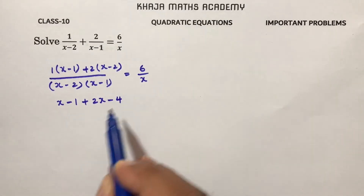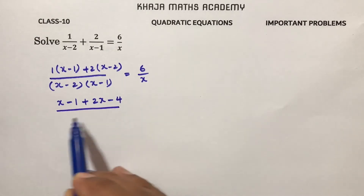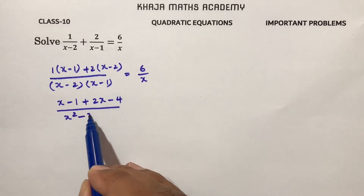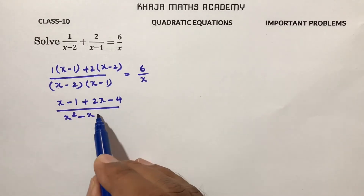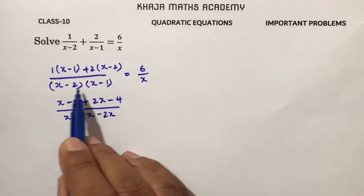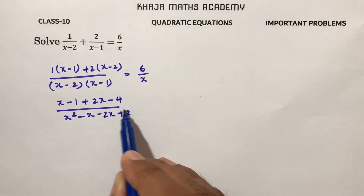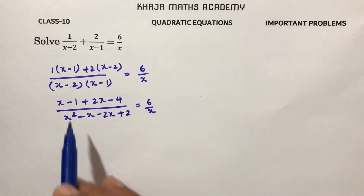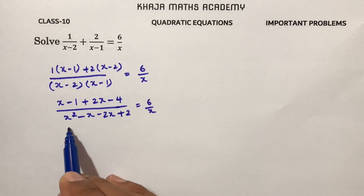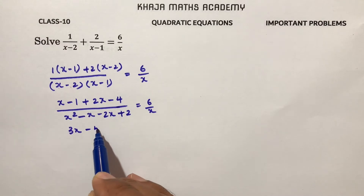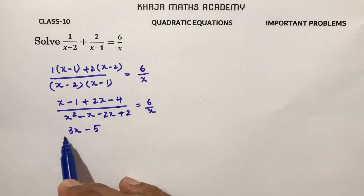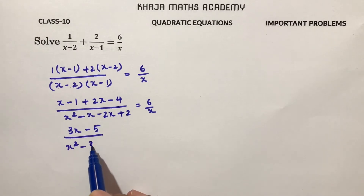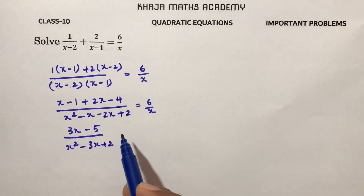The denominator expands as x into (x minus 1) minus 2 into (x minus 2), giving x squared minus x minus 2x plus 2. The numerator simplifies: x plus 2x is 3x, and minus 1 minus 4 is minus 5. So we have (3x minus 5) divided by (x squared minus 3x plus 2) equals 6 by x.